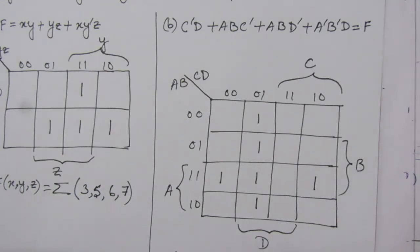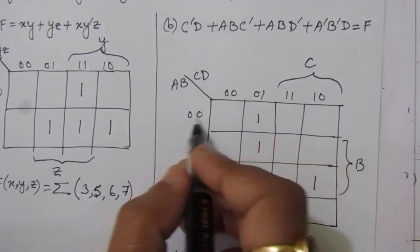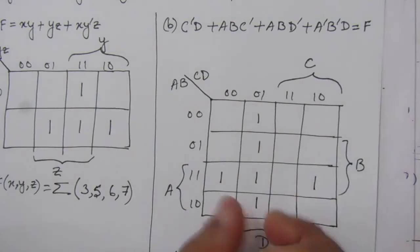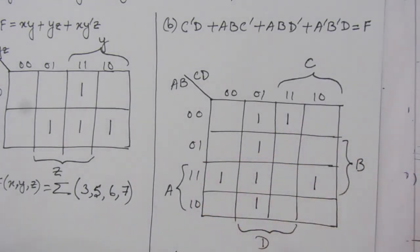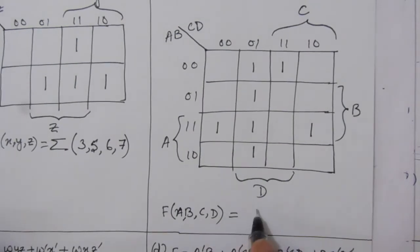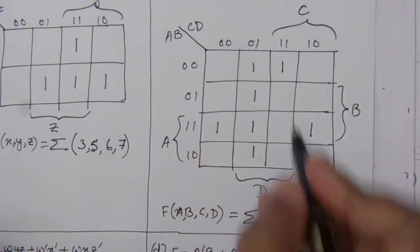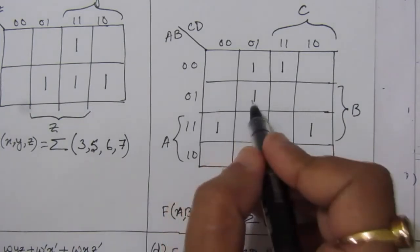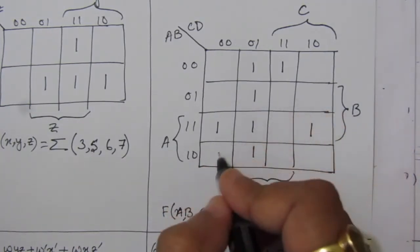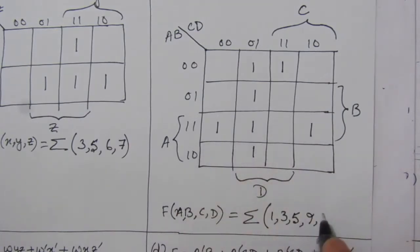Then for a bar b bar d: a bar b bar is the first row and d means these two columns — we already have a one here, so we put another one. From this completed four-variable map we can write the sum of minterms expression as sum of 1, 3, 4, 5, 9, 12, 13, and 14.